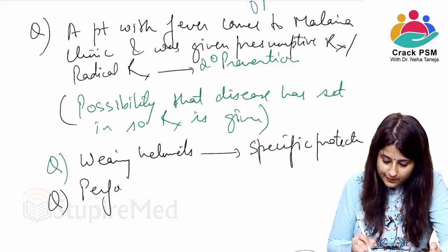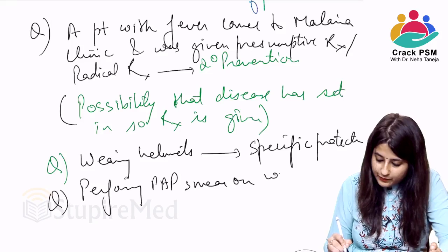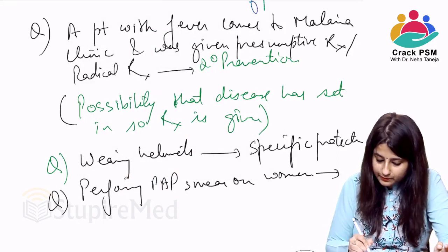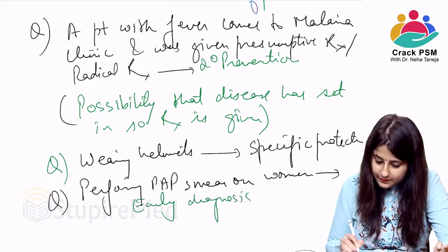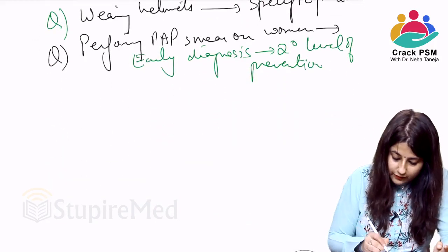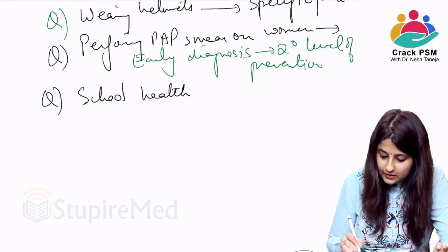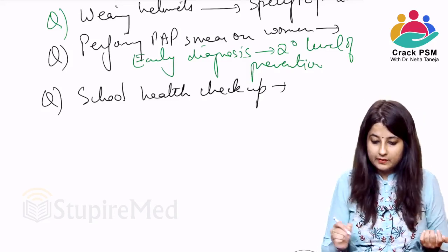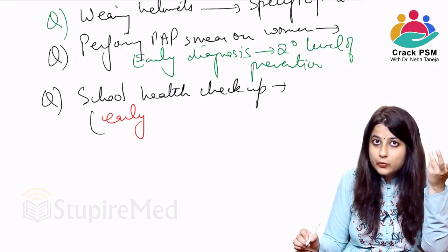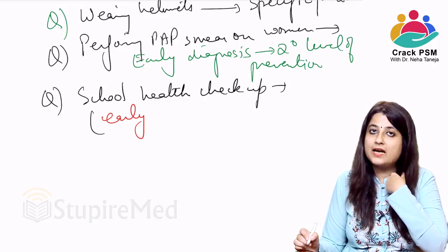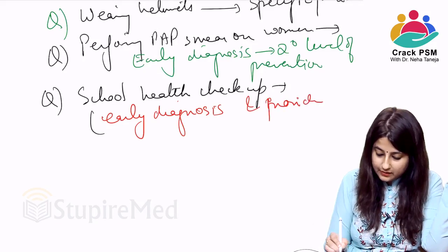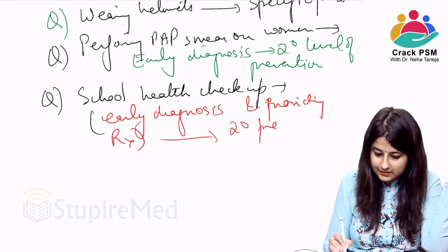Performing a Pap smear on a woman — we are making an early diagnosis of cervical cancer, so this is secondary level of prevention. School health checkup is also secondary prevention: for example, we do an eye checkup for a child to find out whether they have a refractory error — this is early diagnosis and treatment, so it is secondary prevention.